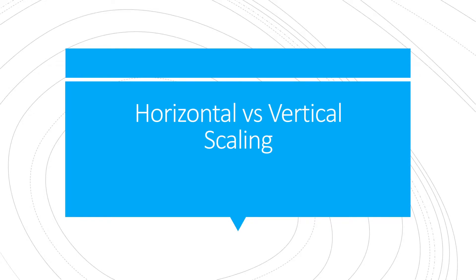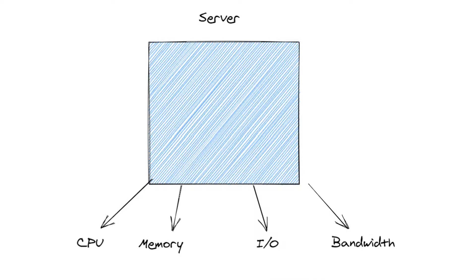In this video I'm going over the two main ways to scale your web application, which are horizontally or vertically. We'll be going over the pros and cons of both and then looking at the trade-offs between the two options. So let's say you have your own web app running on a single server, and the number of users is rapidly growing, which is obviously a good thing, but those users are starting to complain that your application is running slow.